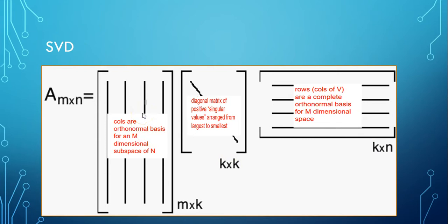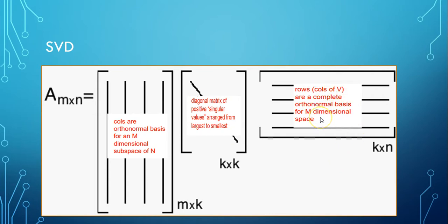Some of the properties of these matrices are interesting. First of all, U has orthonormal columns, which means if you take two columns and multiply them point-wise, the result will be zero. The middle matrix D is a diagonal matrix, and the values on the diagonal are called singular values — these are arranged from largest to smallest. The last matrix V is also an orthonormal matrix. Let's see this with an example.